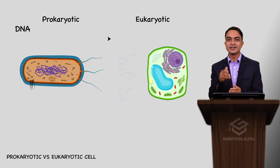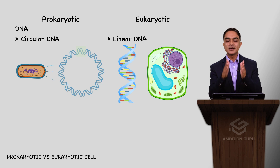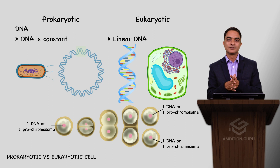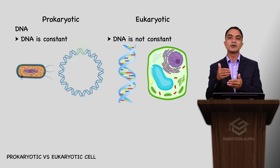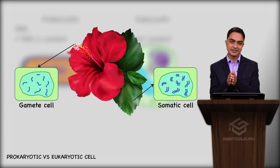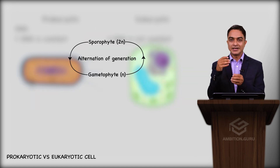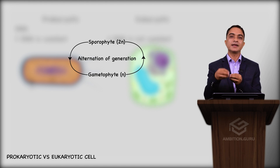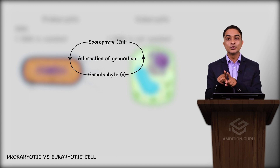The DNA shape in eukaryotic cells is linear, while in prokaryotic cells it is circular. In a prokaryotic cell, the amount of DNA remains constant throughout the life, but in eukaryotic cells the amount of DNA may alter — generally differing between somatic cells and gametic cells. There is always alternation of generation in eukaryotes.